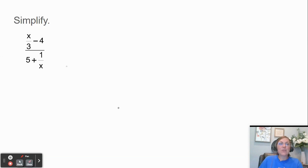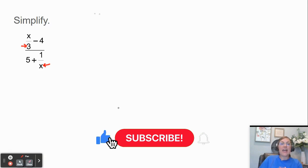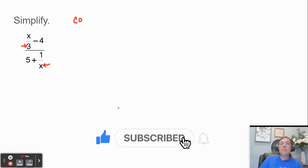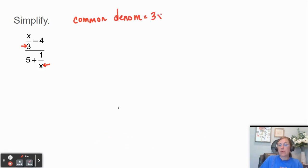And the first thing I would ask you is to look at the denominators in the smaller fractions. So you see that one of the small fractions has a 3 in the denominator, another one has an x. So if we were going to make a common denominator, which by the way we're not, but if we were, that common denominator would be 3x. Great.